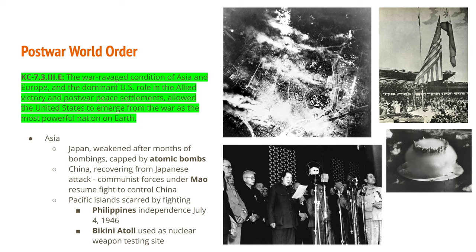In China, the country was recovering from the Japanese attack on Manchuria. Before World War II, China was undergoing a civil war between Nationalist Democratic Forces and the Communist Forces led by Mao Zedong. In 1945, when the war ended, the Civil War resumed, and by 1949 the Communist Forces under Mao took control of China. Chiang Kai-shek, the leader of the Nationalist Forces, was exiled to the island of Taiwan.